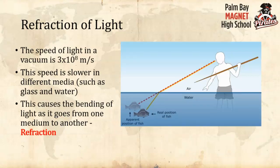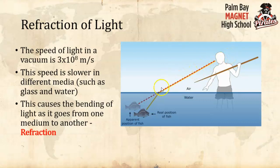Another effect of refraction is that when you look in water, the thing you're looking at isn't actually where it appears. Like a straw in a glass of water looking bent, or trying to spearfish — the light coming from the fish speeds up as it hits the water surface and bends away, so the fish appears higher than it actually is. Aim underneath the apparent position.